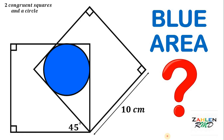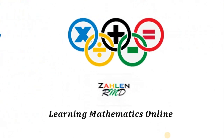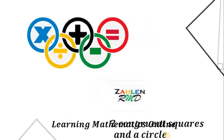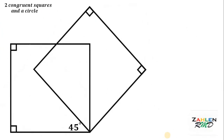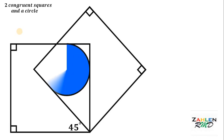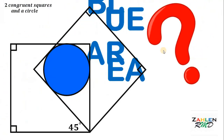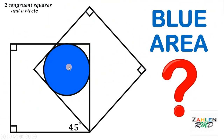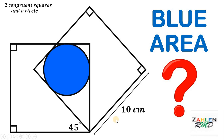Hi everyone, here's our math challenge for today. Let's start with these two congruent squares. On the overlapping region, let's draw a square that is tangent to all sides of this square. Our goal here is to find the area of this circle shaded in blue, given that the length of the side of this square must be equal to 10 centimeters.